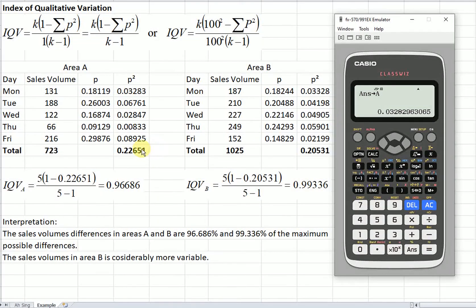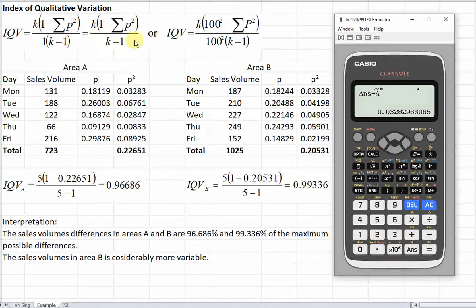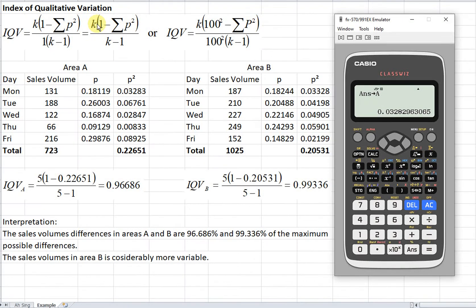After we gather the total, what we have to do is just plug the value into the formula that we have. Then what is K? K is the number of categories that we have. So all together, we have one, two, three, four, five categories. So we will use five, then times total proportion is one.